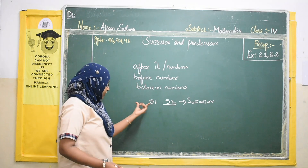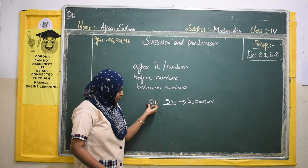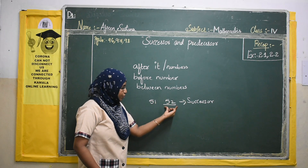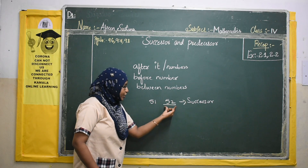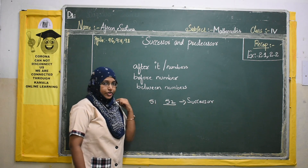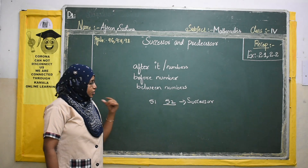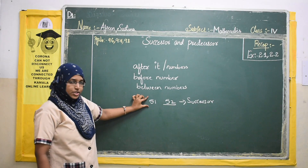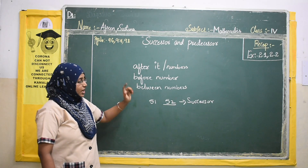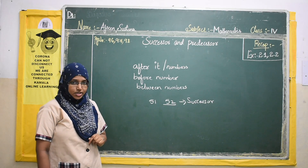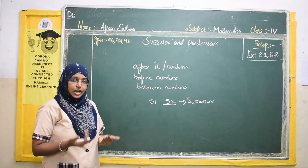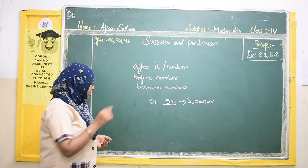Now I have taken the number 51. What is the number after 51? It is 52. So 52 is the successor of 51. We have done this with very small digits. Now, as our chapter name is large numbers, we will work with some large numbers.